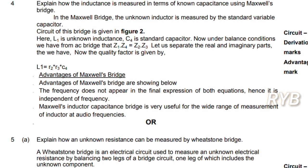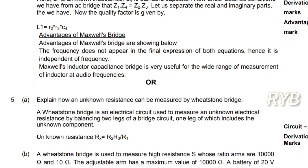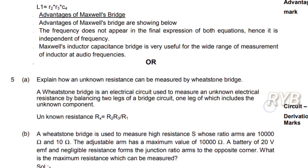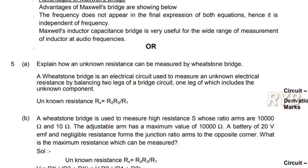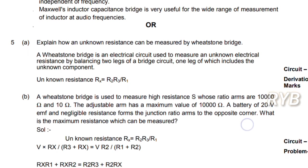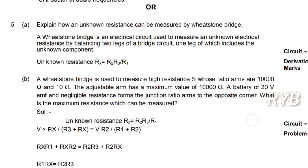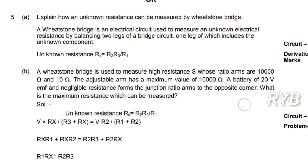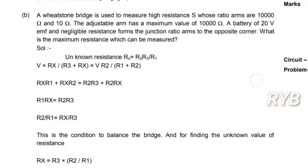Another choice question in Unit 2: how can unknown resistance be measured using a Wheatstone bridge? The circuit diagram will be provided at the end. Circuit five marks, derivation five marks — you will get easily 10 out of 10 from Unit 2. For Part B, a Wheatstone bridge numerical problem is given; draw the circuit, derive the equations, substitute the values to get the answer for 10 out of 10 marks.